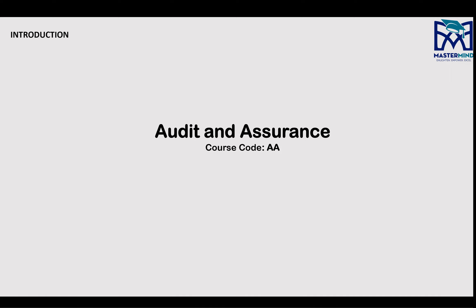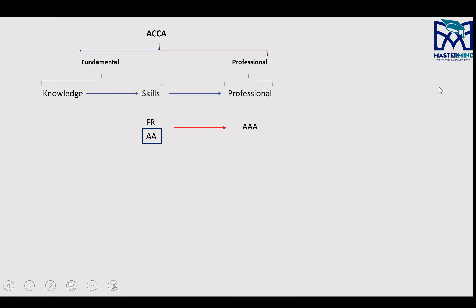The course code is AA, and we're studying for the June 2021 attempt. Let's look at some details related to the course, some preparation strategy, and then we'll look at the timetable.